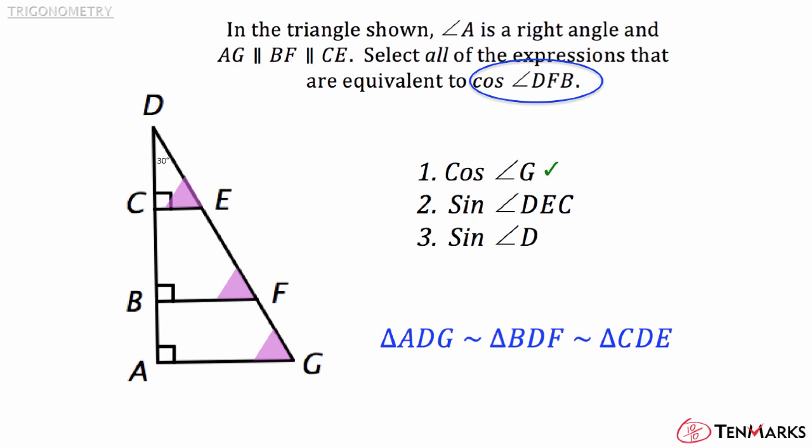What about the sine of angle DEC? Is that equivalent to the cosine of angle DFB? The only time that the cosine and sine of an angle are equivalent is if the angle is 45 degrees. Since angle D is 30 degrees, that is not the case here, which means that the sine of angle DEC is not equivalent.